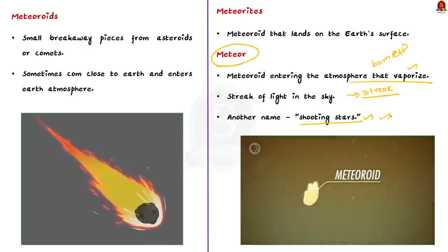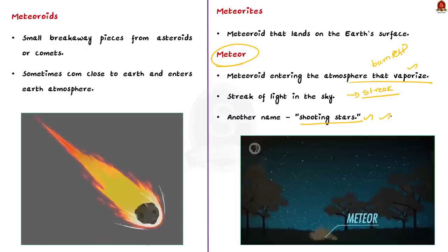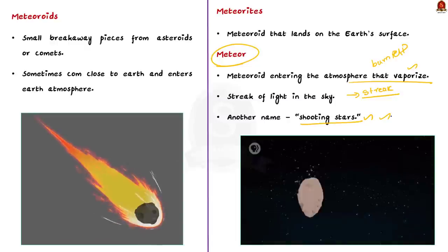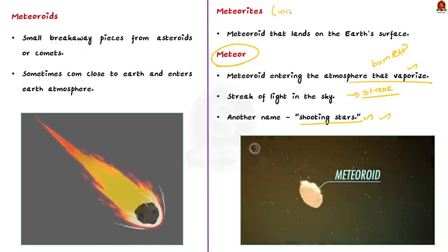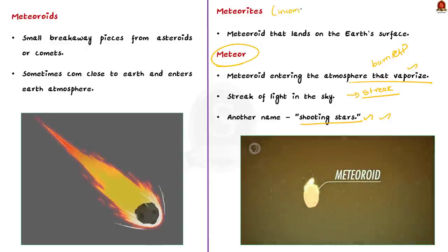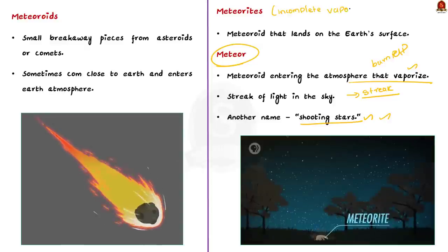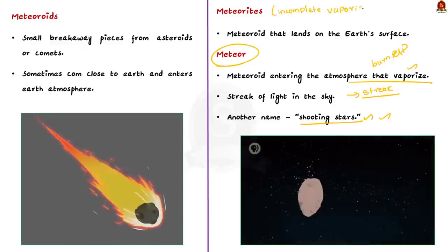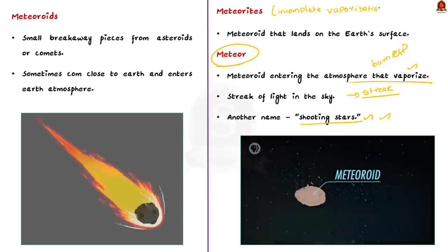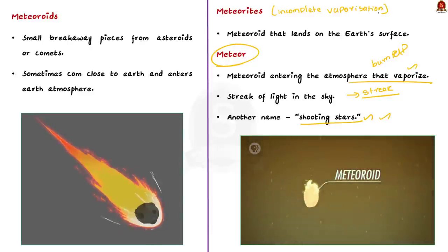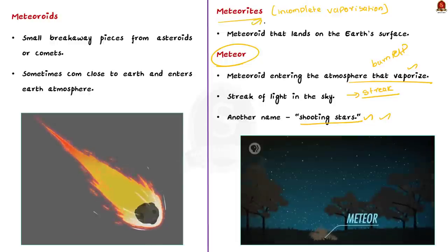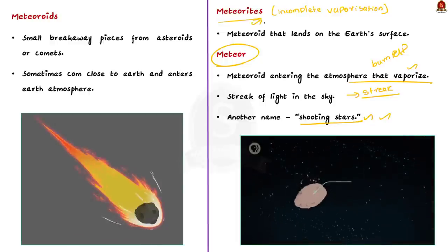Since the meteoroids vaporize, they do not land on the earth. But what happens to a meteoroid that does not vaporize completely in the atmosphere? What if they survive their trip through earth's atmosphere and land on the earth's surface? When they land on the earth, they are called meteorites. One such meteorite that survived the journey is what landed in Somalia.